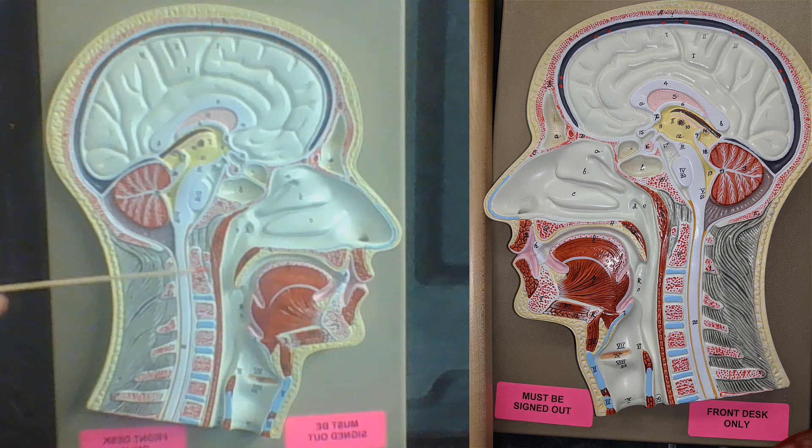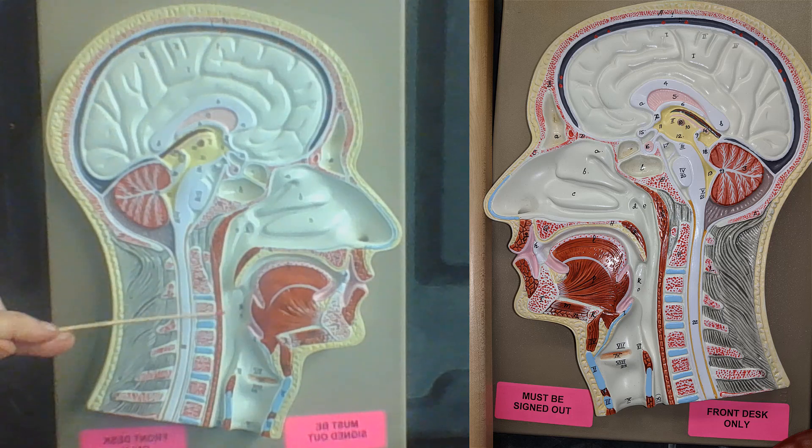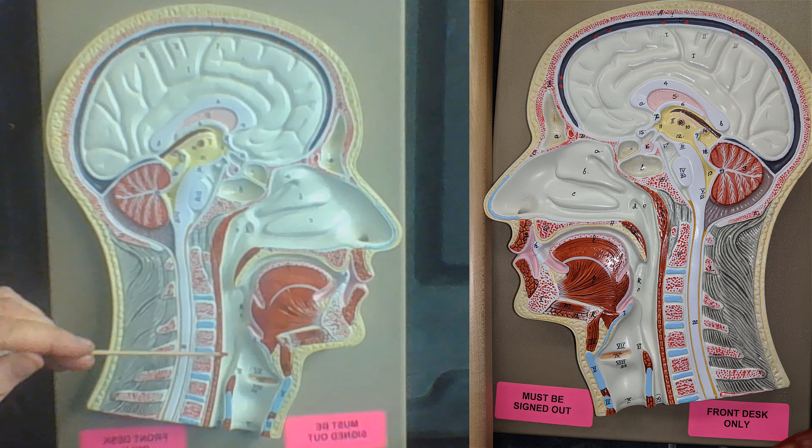The portion of the pharynx that is behind the oral cavity is the oropharynx. And the portion of the pharynx that is in this region is the laryngopharynx.